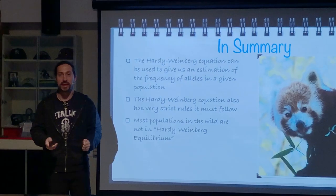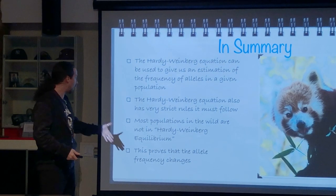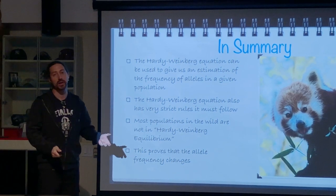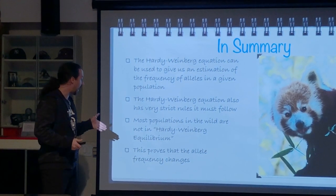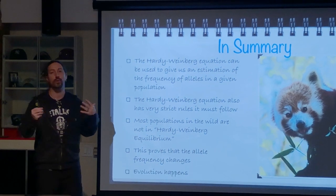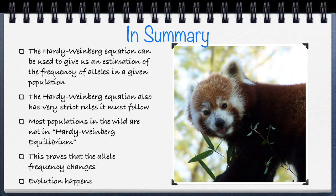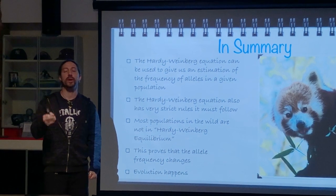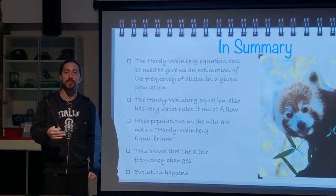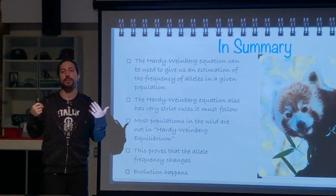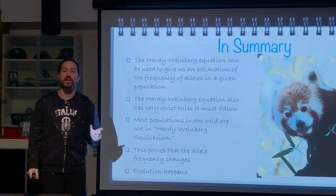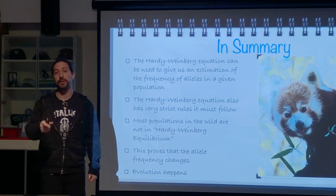What this shows us is that allele frequencies do change — and if allele frequencies change, the Hardy-Weinberg equation actually proves that evolution happens. If evolution did not occur, we could always use Hardy-Weinberg to solve allelic frequencies in any population. But the fact that the Hardy-Weinberg equation fails us so often shows that evolution takes place, and that allele frequencies change. That's it for this time.